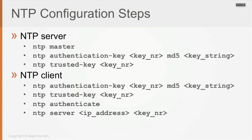If NTP authentication is not required, on the client you just need to configure the last command, which is NTP server and the IP address of the server. You don't have to configure the key number — you only put a key number at the NTP server command if authentication is enabled, and at that point you also need the above three commands on the client side.